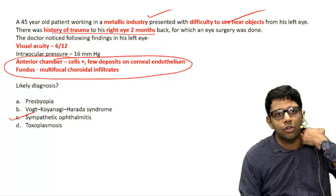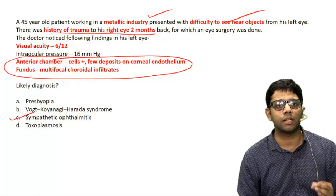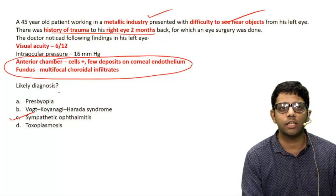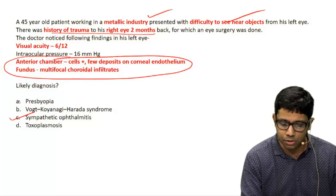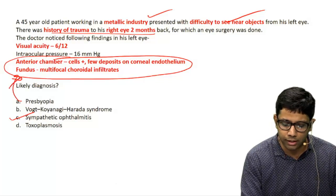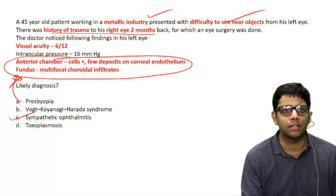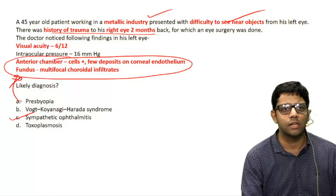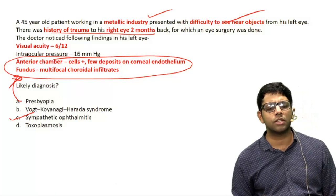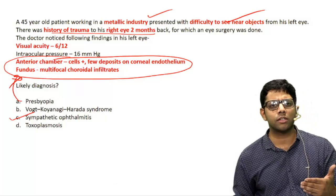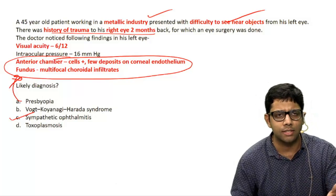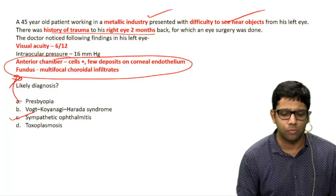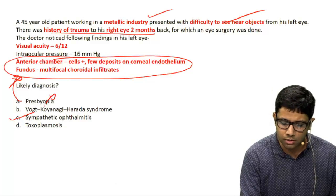This is the classical presentation of sympathetic ophthalmia. Presbyopia also causes difficulty in near vision, but in presbyopia you will not get these inflammatory cells. Presbyopia occurs only after 40 years of age — physiologically, after 40 years accommodation decreases and near vision reduces. So presbyopia is not the answer.